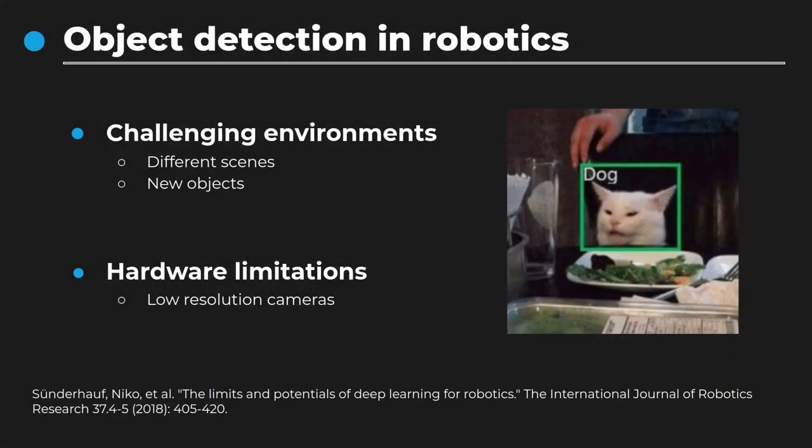Moreover, when applying these models to robotics, an issue arises: how to deal with the changing environment and any object the robot will encounter. While performing well on benchmark datasets, deep learning models suffer a drop in performance when applied to robotic platforms, mainly due to the environments robots are deployed in, which were not represented in the training dataset.